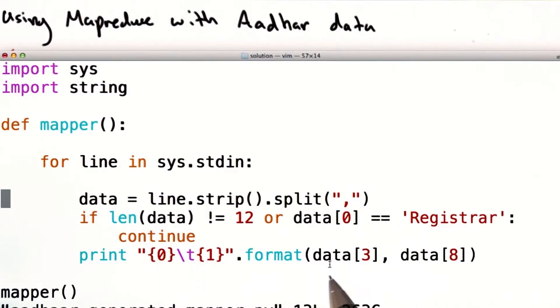Otherwise, we print the district and the number of Aadhaar generated, separated by a tab.